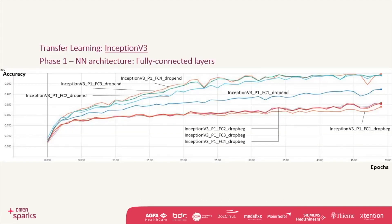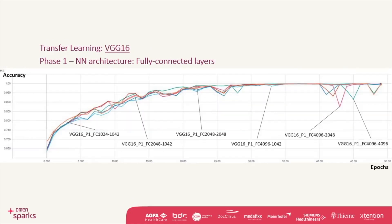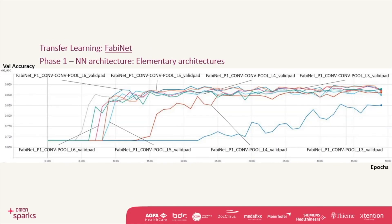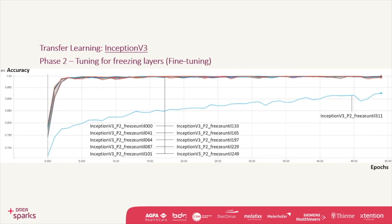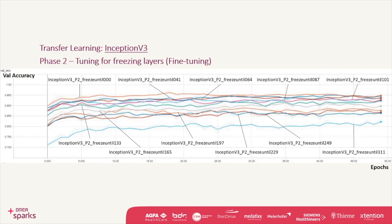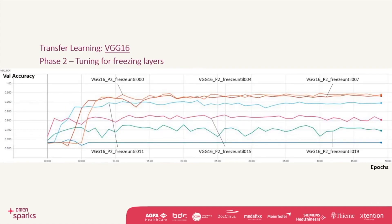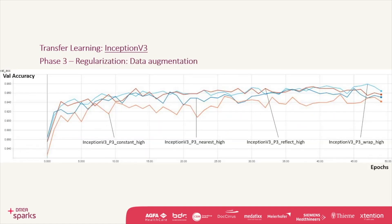All these variations were evaluated on an optimization metric — that is, validation and test accuracy — and a satisfying metric — that is, training accuracy, loss, training time, time-to-peak accuracy, and volatility in the curves.